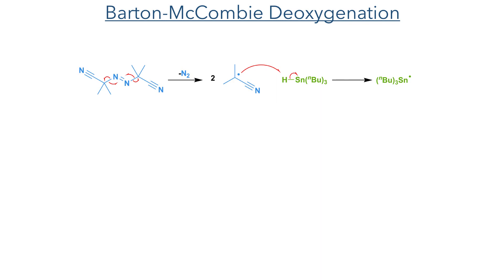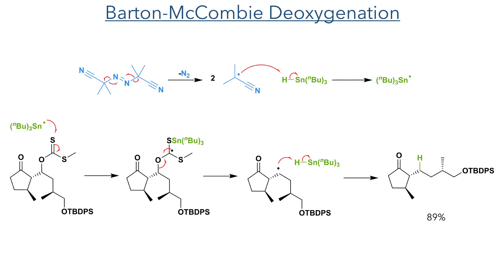To carry out the deoxygenation, AIBN is first heated to generate a radical upon the loss of nitrogen gas. This radical abstracts a hydrogen from tributyltin hydride to generate a tin radical. This tin radical first adds to the sulfur to generate a carbon-centred radical that is stabilised by the three adjacent heteroatoms. Homolytic cleavage of the carbon-oxygen bond eliminates the tin xanthate and produces a carbon-centred radical, which then reacts with another molecule of tributyltin hydride to complete the reaction and regenerate the tin radical.